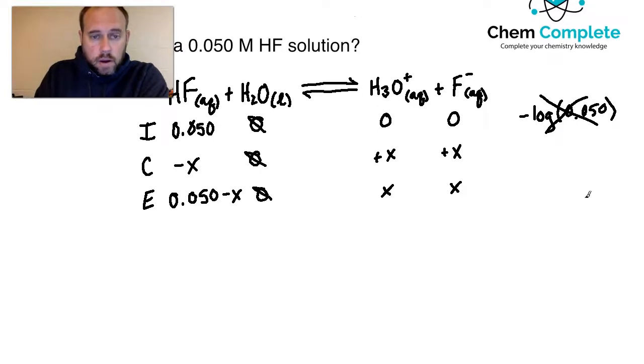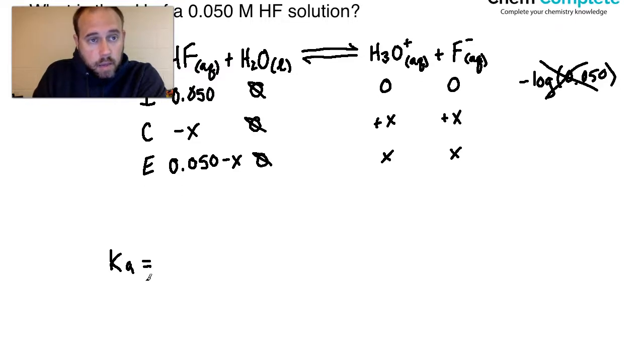So from here, we need to set up the actual equilibrium expression. Now for this, you're going to need the Ka. This would be something that would have to be given in the problem, or you would need to reference it from a table. A lot of books have these tables for acids or for other equilibrium constants. Now the Ka for this particular acid is 7.1 times 10 to the negative fourth.